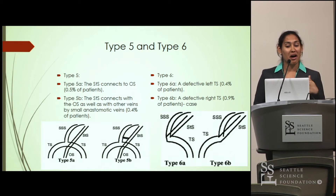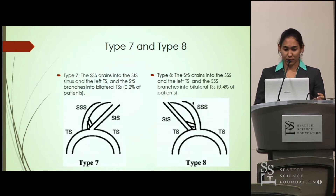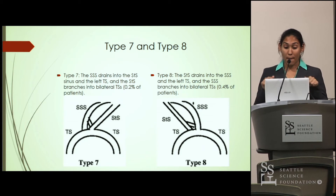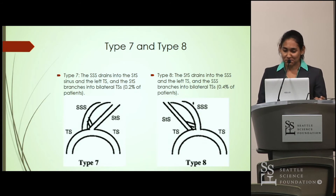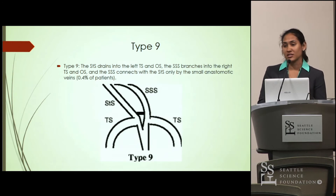Type 6 involves a defective left transverse sinus (A) or a defective right transverse sinus (B). Type 7 has the superior sagittal sinus draining into the straight sinus and the left transverse sinus, with the straight sinus branching into bilateral transverse sinuses. Type 8 involves another straight sinus draining into the superior sagittal sinus and the left straight sinus. Type 9 features an anastomotic vein connecting the superior sagittal sinus and the straight sinus, with various cerebral sinuses draining into each other.